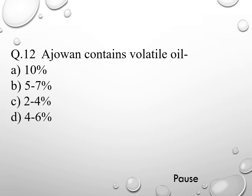Question 12. Anise contains volatile oil: option A 10%, option B 5 to 7%, option C 2 to 4%, and option D 4 to 6%. The right answer is option C, 2 to 4%.